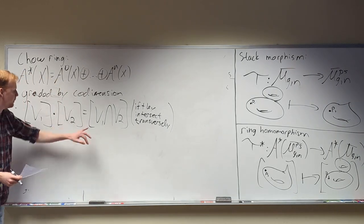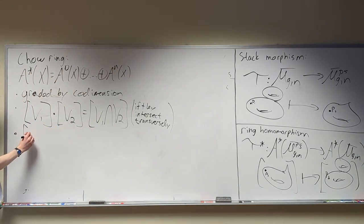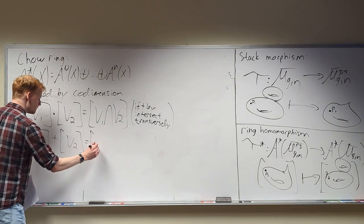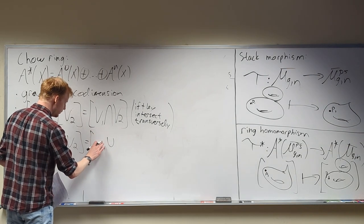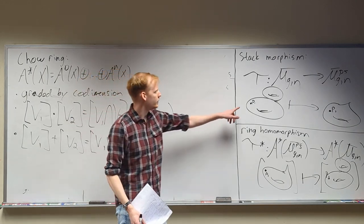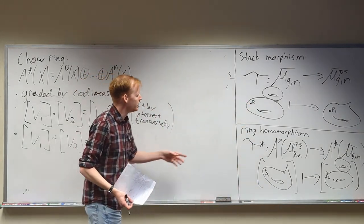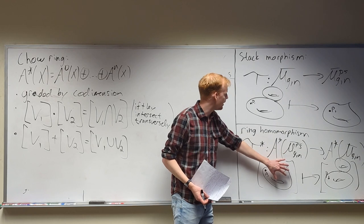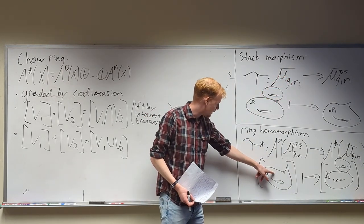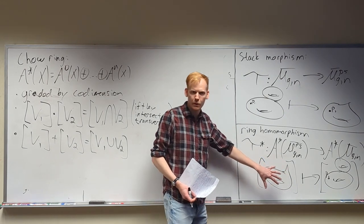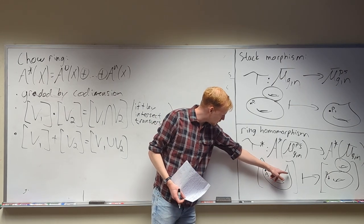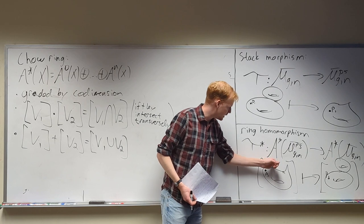Addition in this ring is union. The reason we start putting square brackets around things is to denote that we're now working in the Chow ring instead of the moduli space of curves. Everything that's in this class is everything that has the same topological type — any other pseudo-stable curve that has one hole, one cusp, and one marked point would be in the same class.